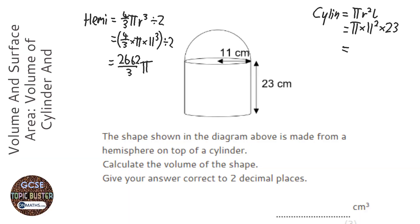And the cylinder is going to be pi times 11 squared times 23. This gives me a bit of a nicer answer. 2783 pi.